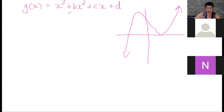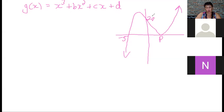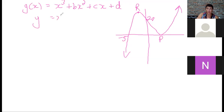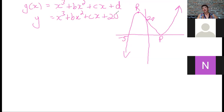New question: the graph of g intersects the x-axis at (−5, 0) and at P, and the y-axis at (0, 20). P and R are turning points. The general equation is y = x cubed plus bx squared plus cx plus d. The y-intercept gives d = 20 immediately. But no x-values for the turning points are given.